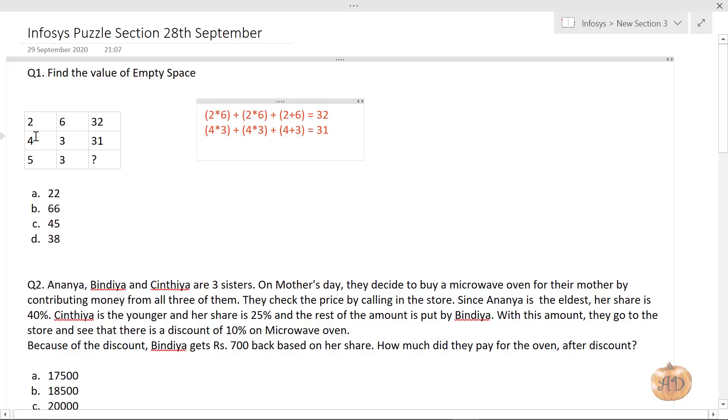The pattern here is multiply 2 into 6 two times and add up, then add individual values of 2 and 6. From this formula, you can apply it for the next row also: 5×3 + 5×3 + 5+3. So the answer is 38.